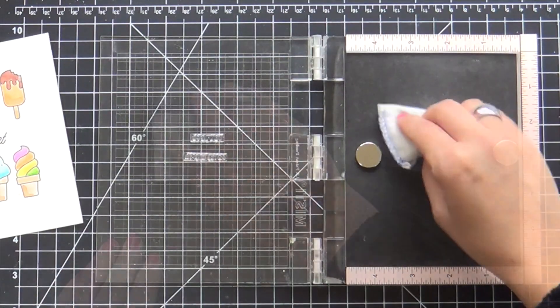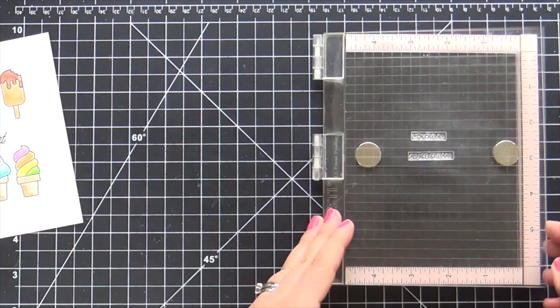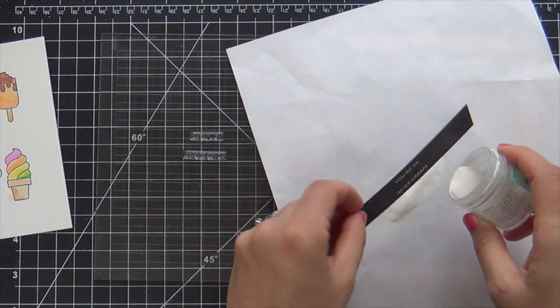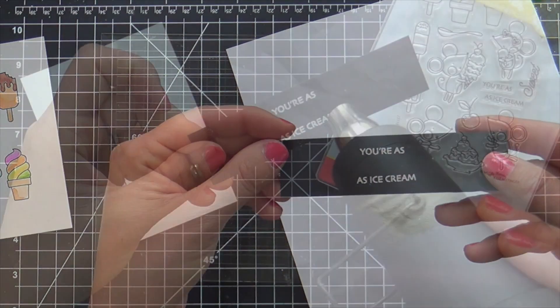Now I'm going to go ahead and emboss a couple of coordinating sentiments from the sweet ice cream stamp set. Going to emboss those in white on some black cardstock, and then I'll heat that with the heat gun and pop these up onto my card.